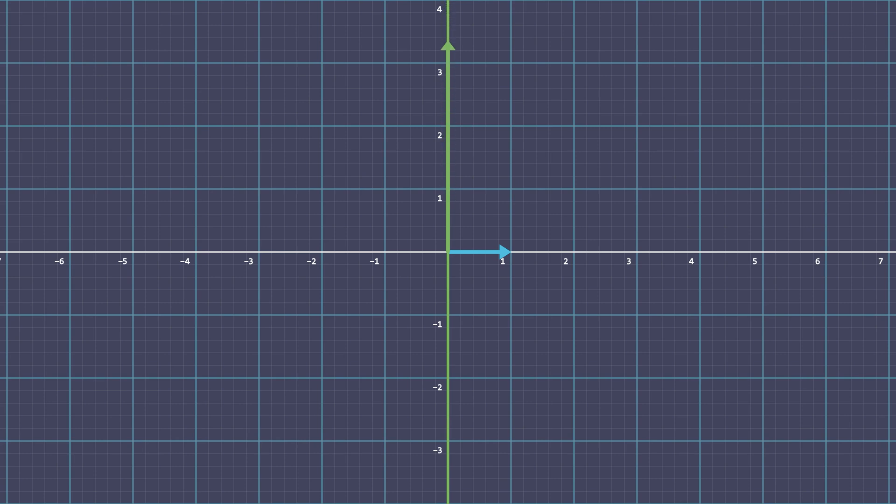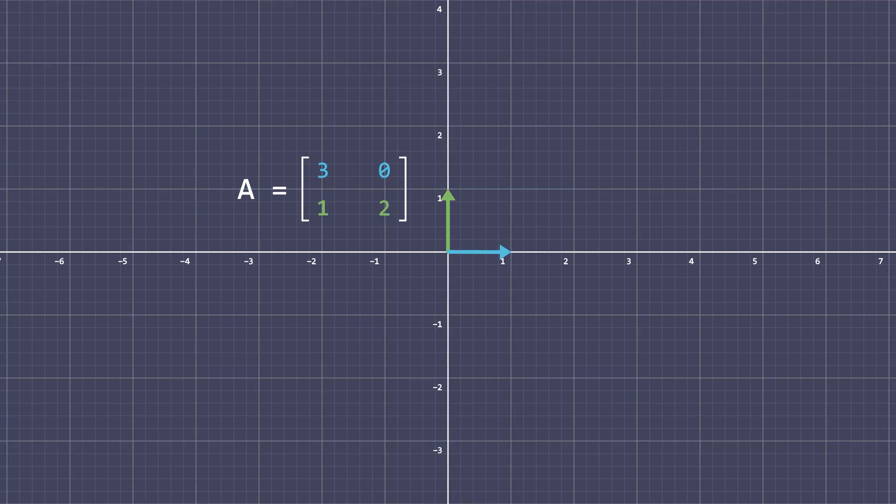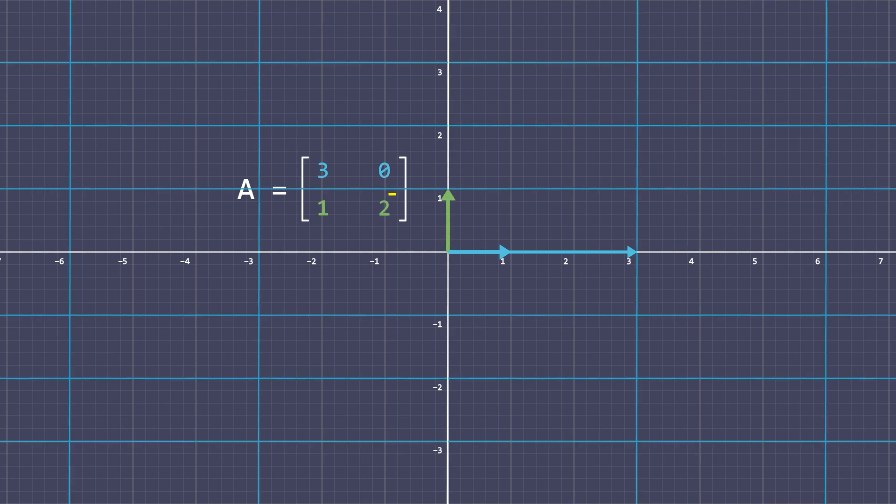No matter how much it stretches or shrinks, it is always on the same line. We also learned that a linear transformation can be represented by a matrix, the rows of which represent the coordinates to which the basis vectors move after the transformation is applied.